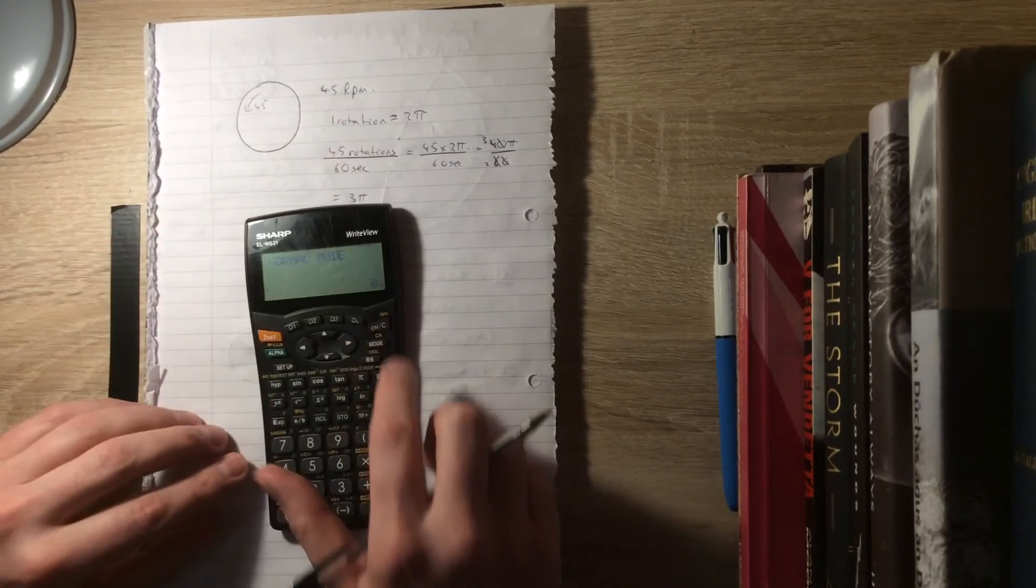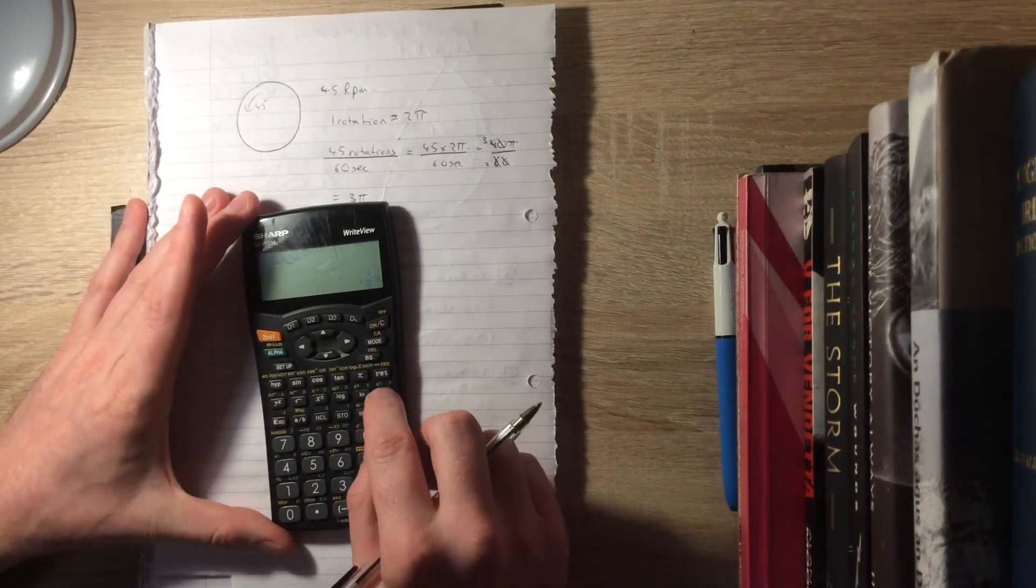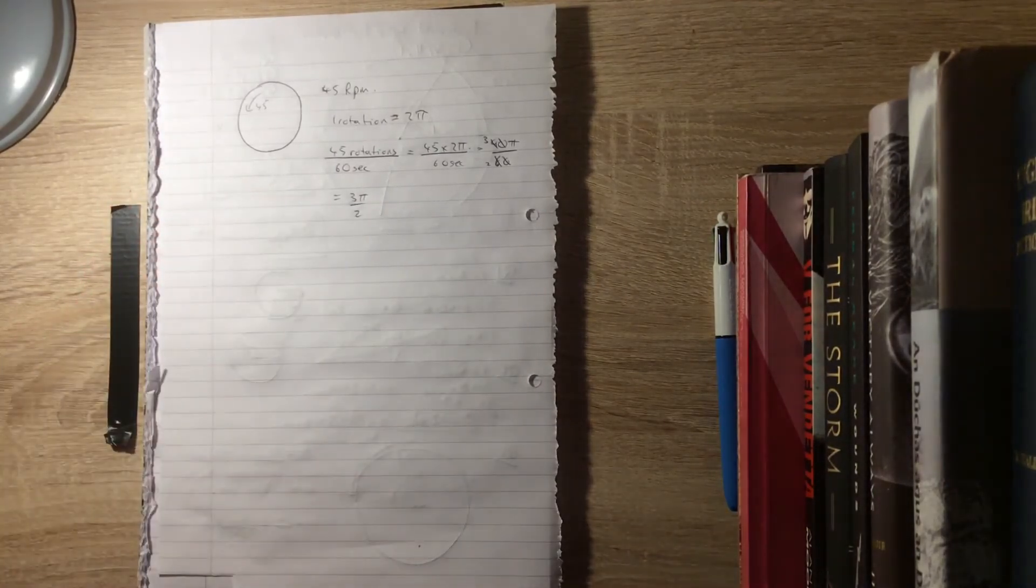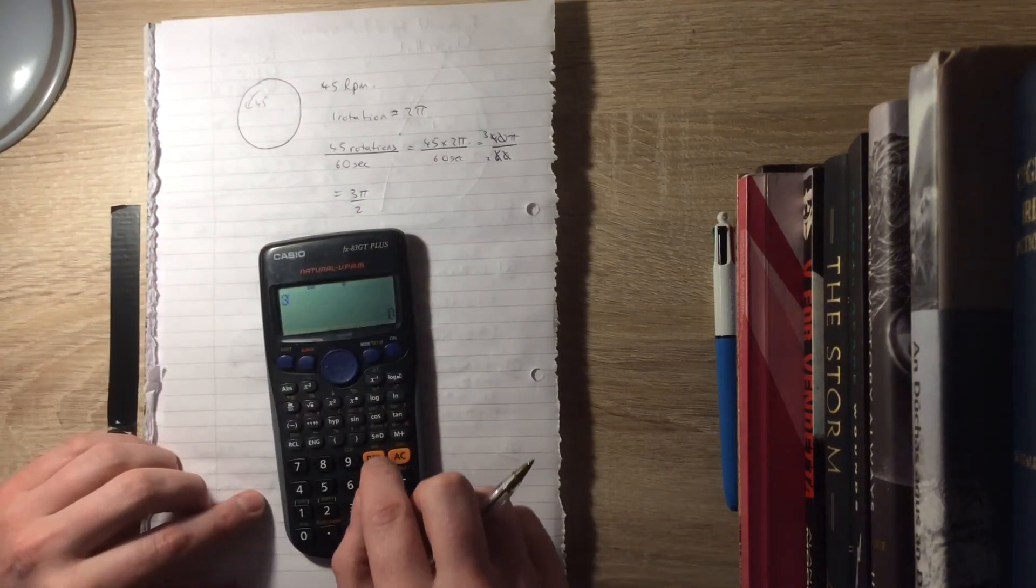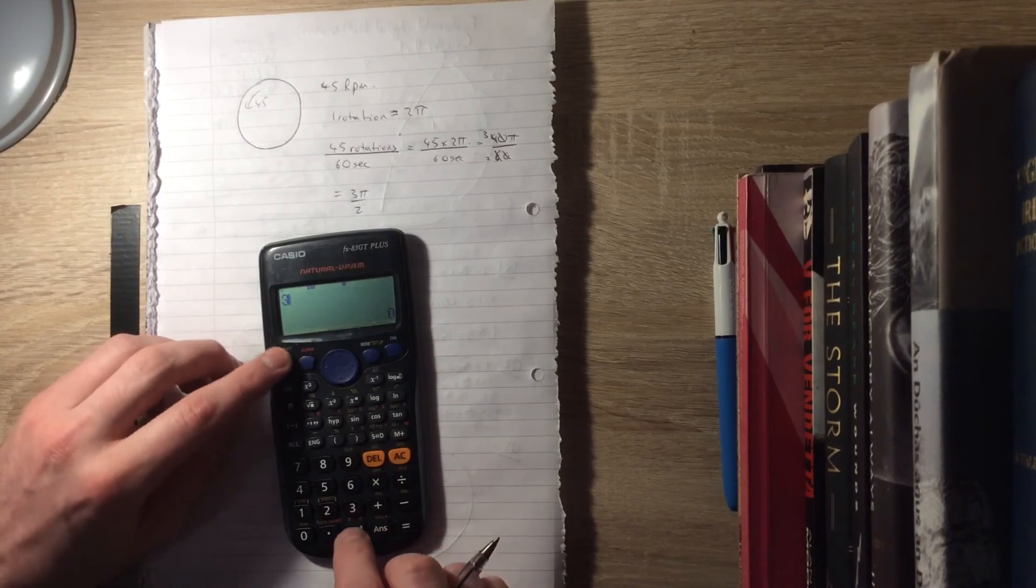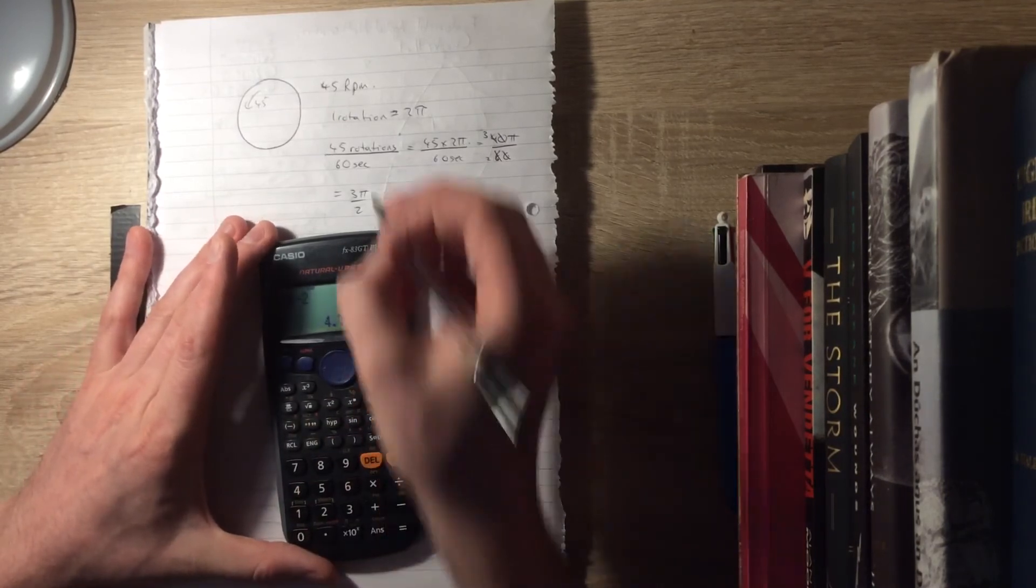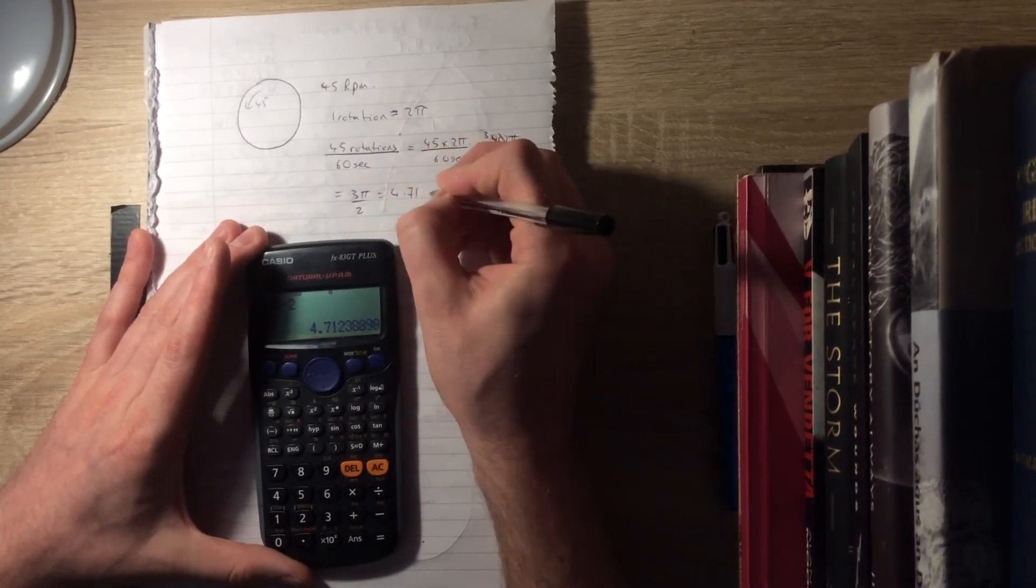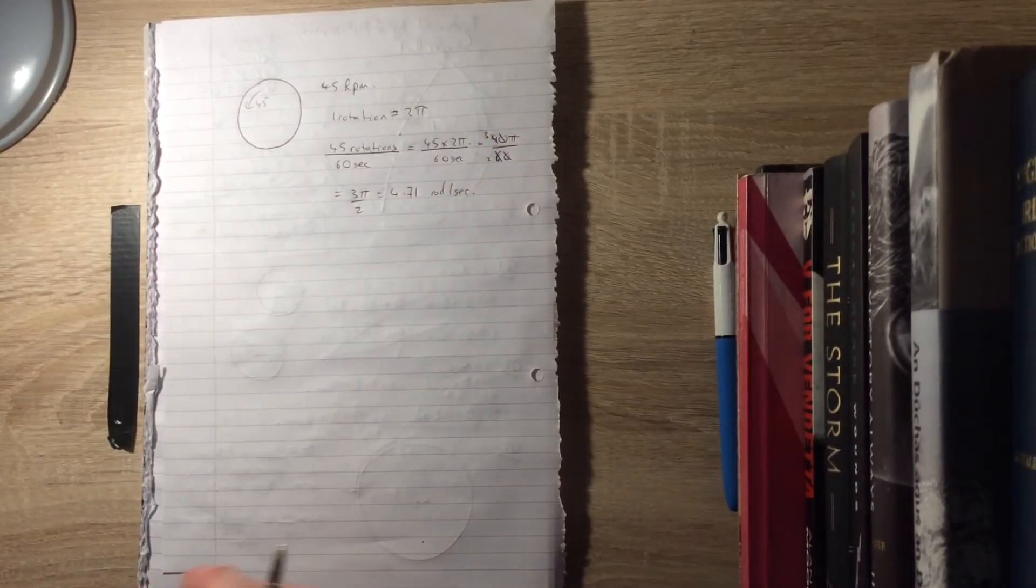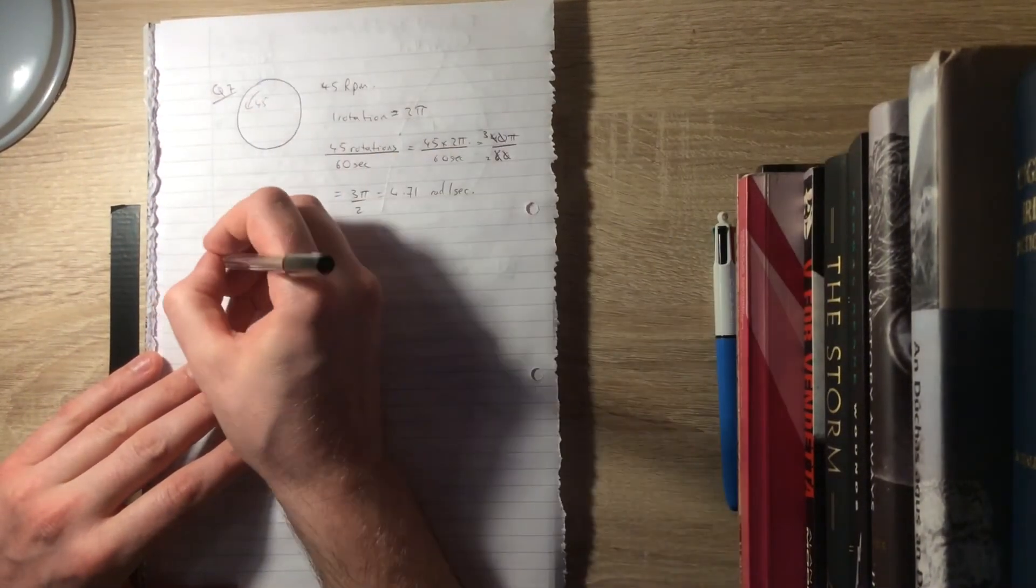Its angular speed to the nearest decimal place is 3π over 2, which is 4.71 radians per second. That's question 7.